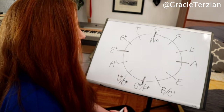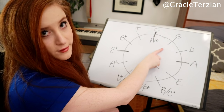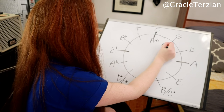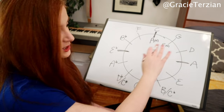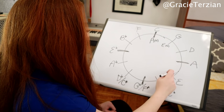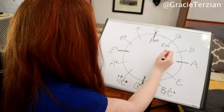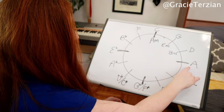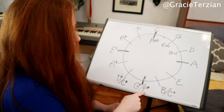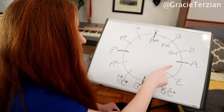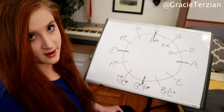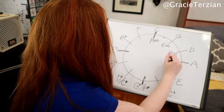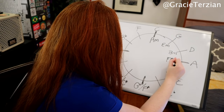The relative minor of G: move over three spaces — E minor. For D: one, two, three — B minor. For A: one, two, three — F sharp or G flat. Since A is a sharp key, we're going to put F sharp minor instead of G flat minor. G flat and F sharp are enharmonic equivalents — the same pitch, just two different names. Similarly, B and C flat are the same note, and D flat and C sharp are the same note.